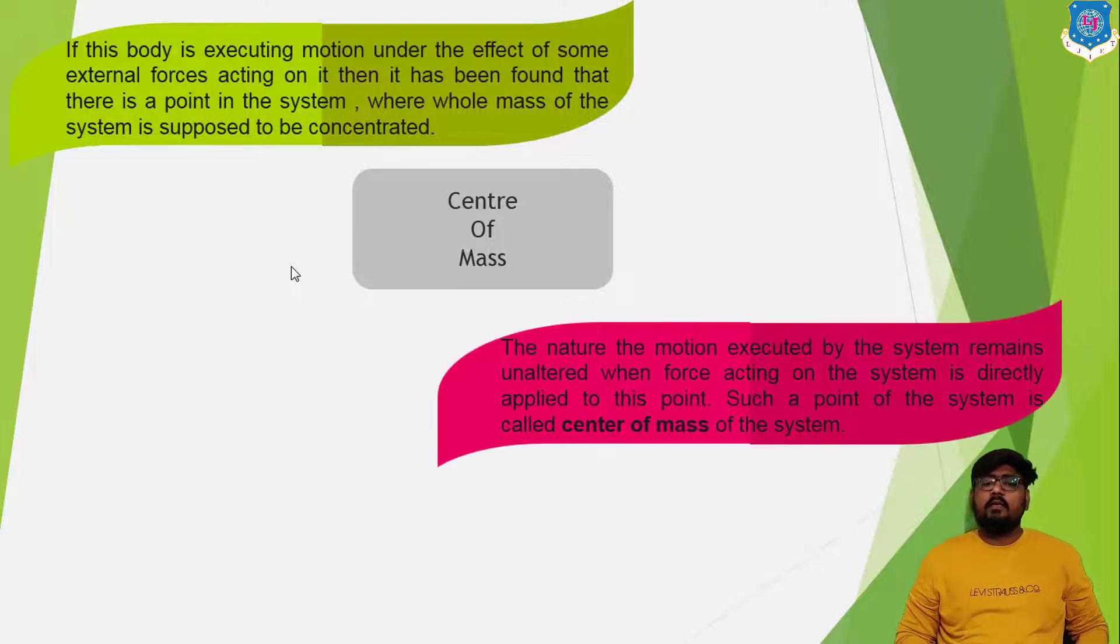The another way is the nature of the motion executed by the system remains unaltered when the force acting on the system is directly applied to this point. If you apply the forces on that particular point, instead of the forces on the entire body, the system remains unaltered. Such a point of the system is known as the center of mass of the system. So these are the two basic definitions regarding the center of mass.